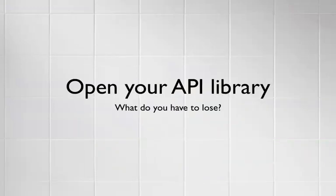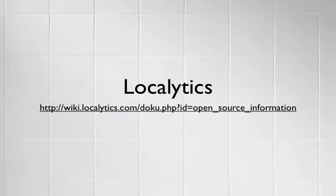We'd always encourage you to open your API library — you don't really have anything to lose. A great example of an open API library is Localytics. This is basically an open source clone of Flurry that lets you host the server yourself, so it's fully open source instrumentation analytics for your app. I like this example because they've open-sourced their specification as well as their code, and it's all very clear that they're not going to try and screw you over — they've got the legalese to prove it.